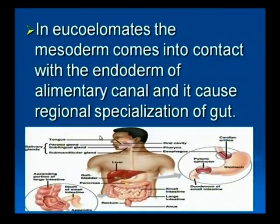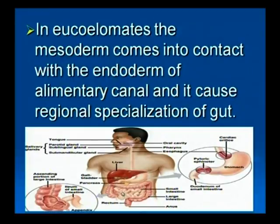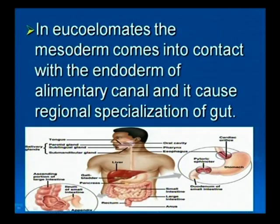In eucelomates, the mesoderm comes into contact with the endoderm of the alimentary canal. This is referred to as regional specialization, such as the development of the stomach and gizzard. This is called primary induction. Have you understood the advantages of the coelom over pseudo-coelom?